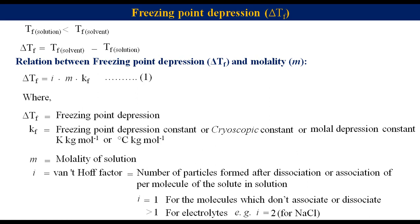Similarly, i equals 3 for CaCl₂ because it is also a strong electrolyte and undergoes complete dissociation in solution to produce one Ca²⁺ and two Cl⁻ ions.